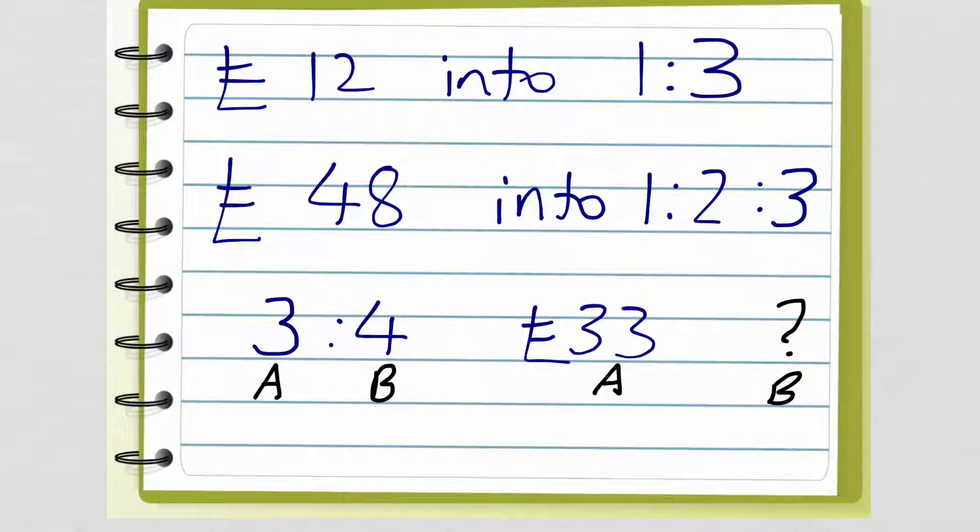So the first part is hopefully you'll be able to divide something like £12 into the ratio 1 to 3. If you get good at that, then you'll be able to make the numbers harder, taking a larger amount, £48, into a ratio with three different numbers in it, 1 to 2 to 3.